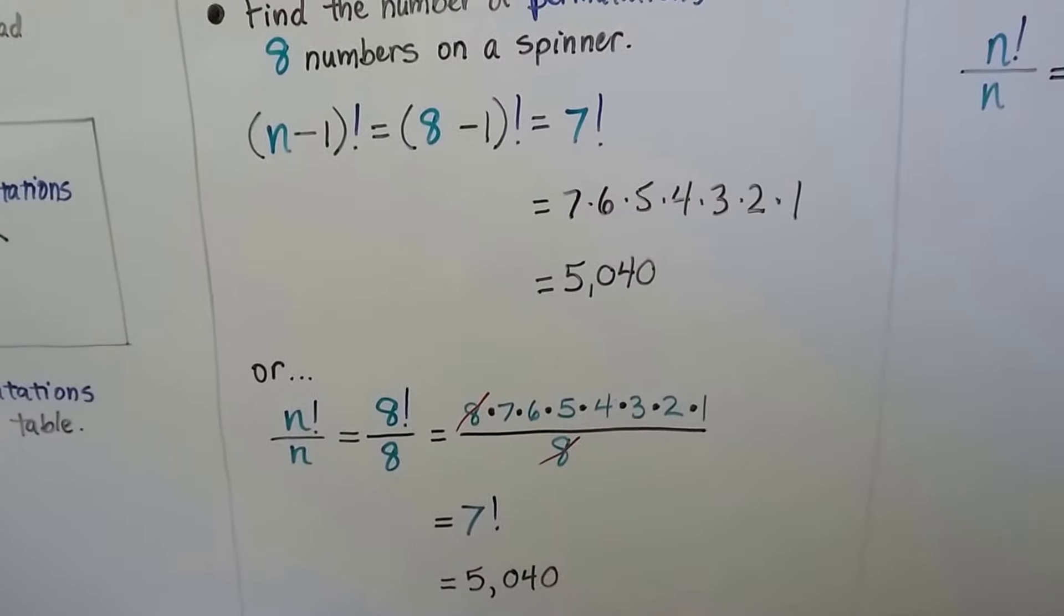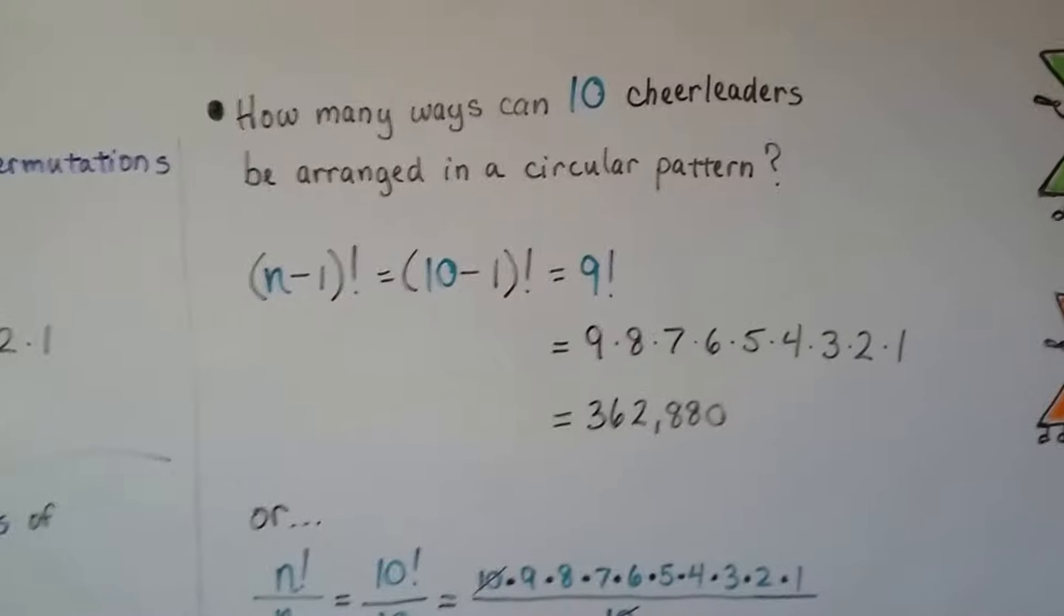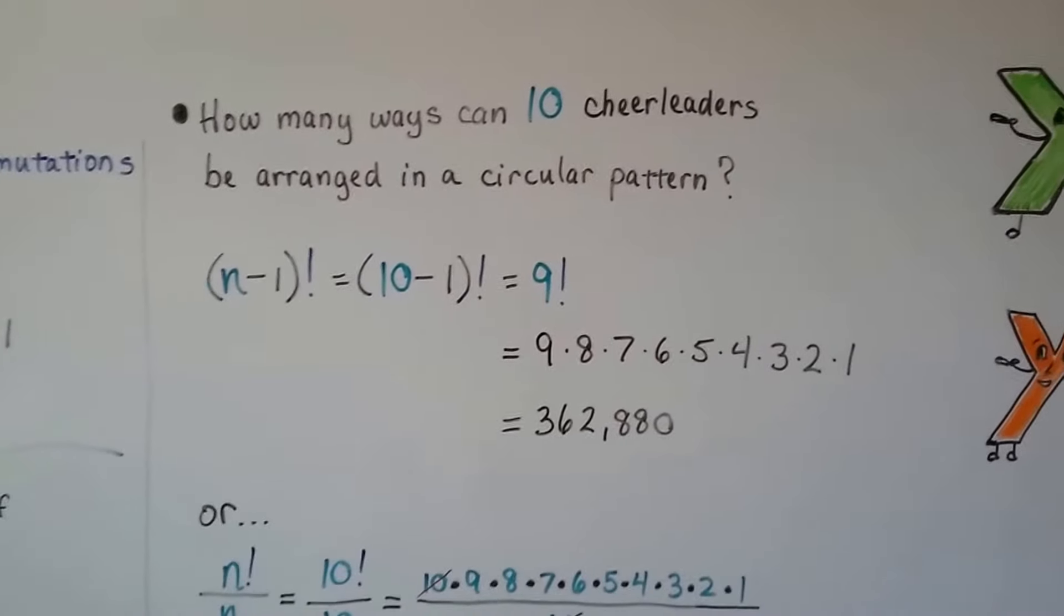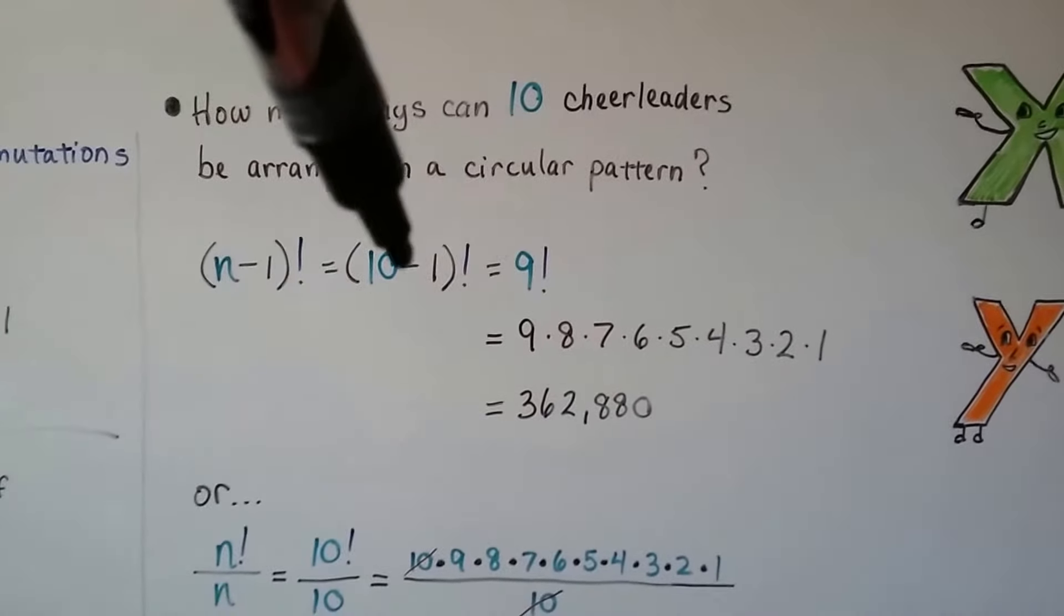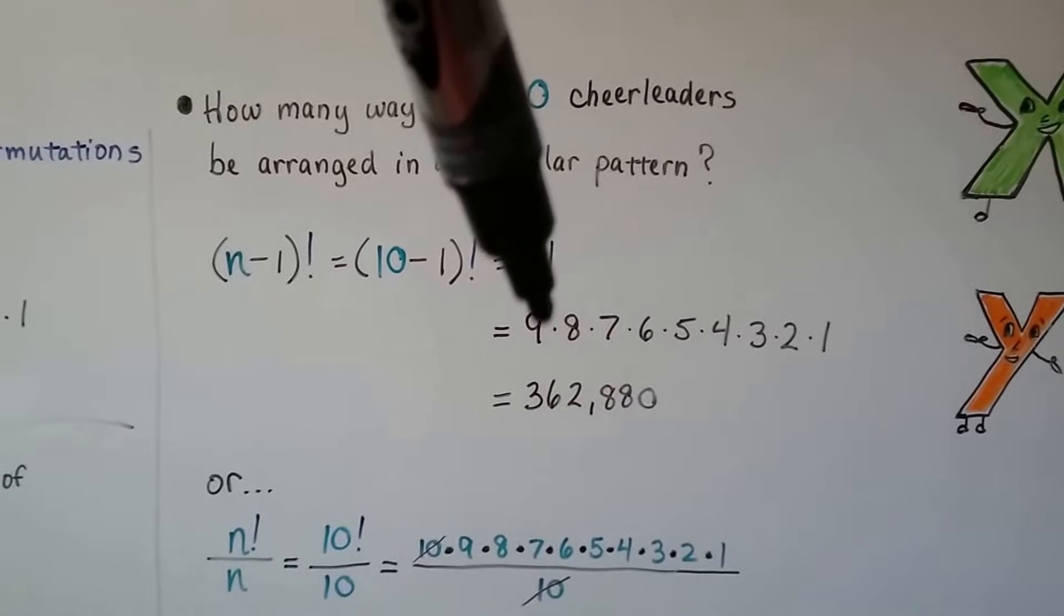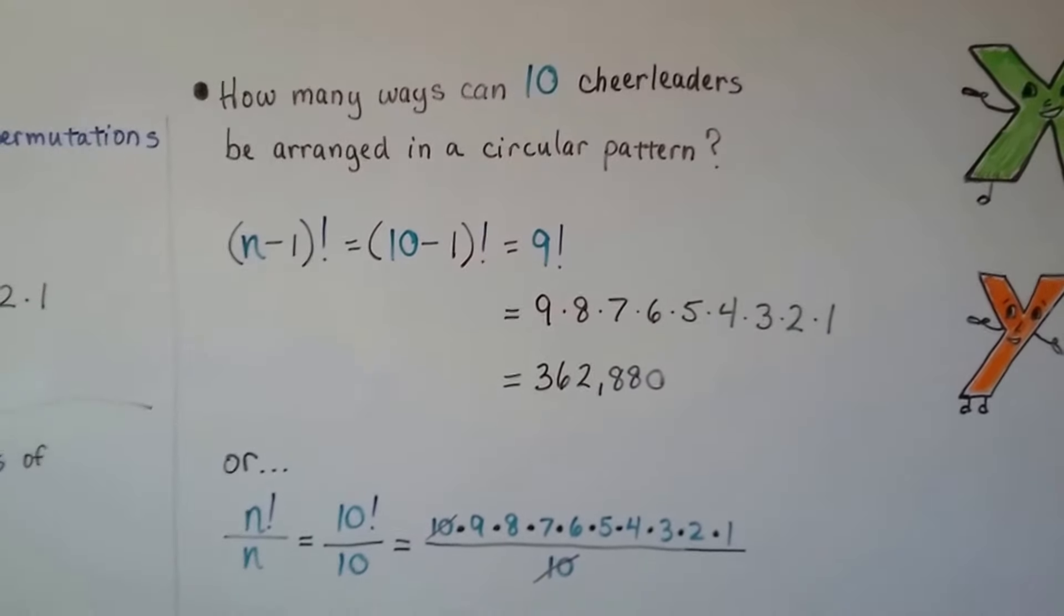How many ways can 10 cheerleaders be arranged in a circular pattern? We do (10-1) factorial, which is 9 factorial, which is 362,880.